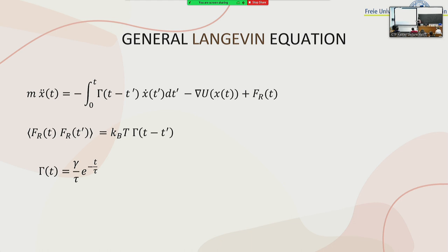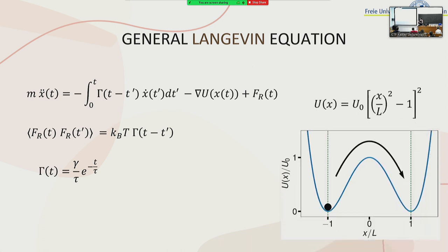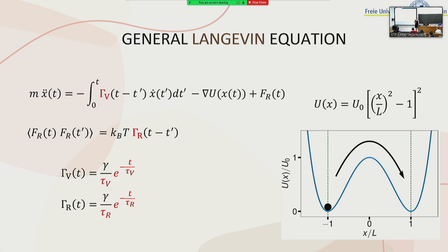I will use a general Langevin equation where the random force is correlated with the kernel. In particular, I will use a decaying exponential kernel where gamma is the friction and tau is the memory time of the system. My potential, as stated in the introduction, will be a double-well symmetric potential. To study systems out of equilibrium, one violates the fluctuation-dissipation theorem, and for that reason we use two different functions.